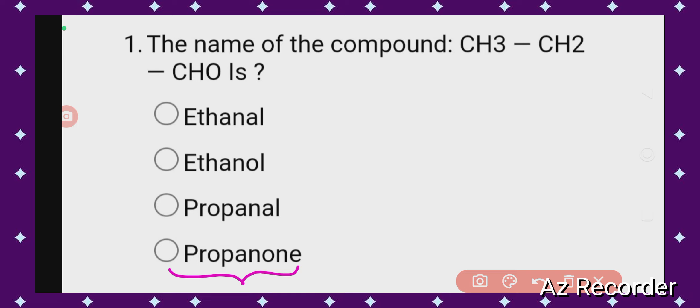Most of you will be thinking why I did not mark option D, propanone. 'One' is written when we have the group ketone. 'One' is used as a suffix when we have the group ketone.